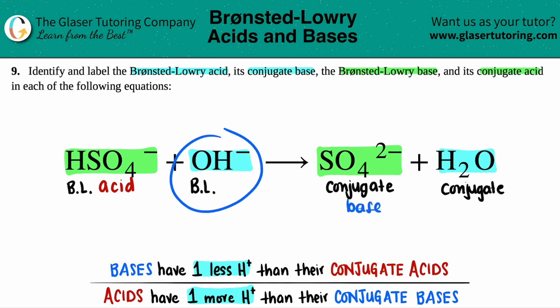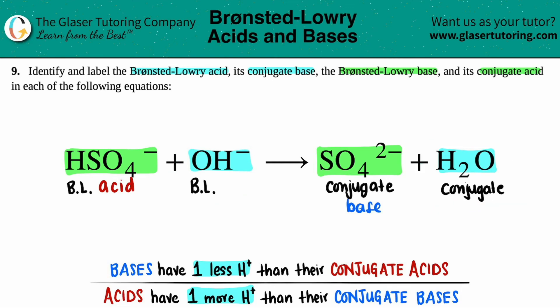We do the same thing with OH⁻ and H2O. The acid will always have one more hydrogen. OH⁻ only has one hydrogen, and H2O has two. Acids always have one more, so H2O has to be the conjugate acid, and OH⁻ is the Bronsted-Lowry base. Note that on one side of the equation you will always have one acid and one base — no two acids and no two bases. If you get that, stop and go back, because something went wrong.